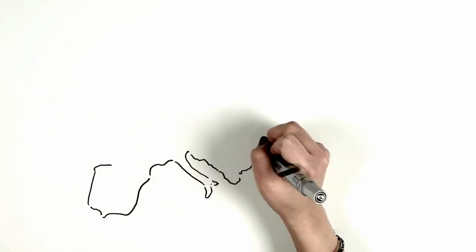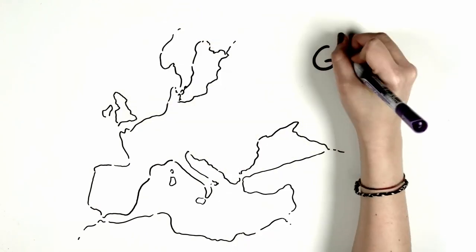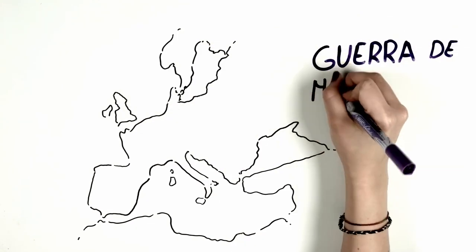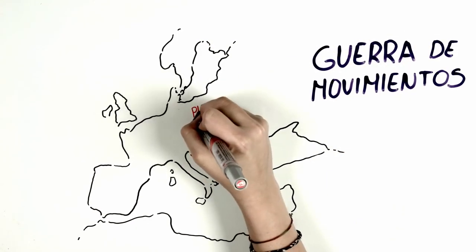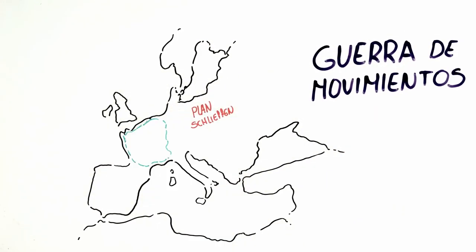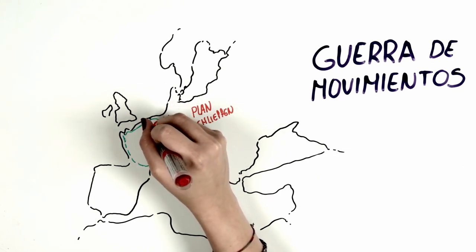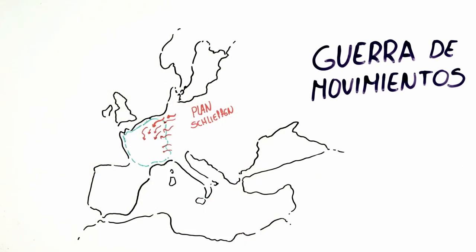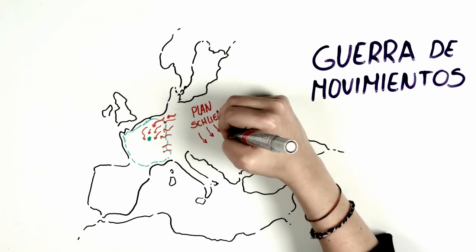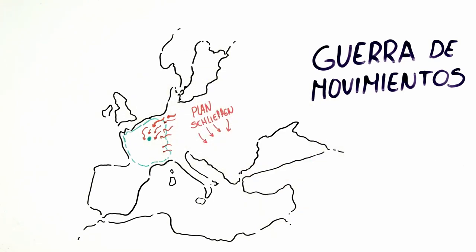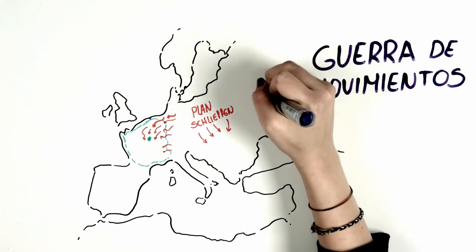With all these novelties, the war of rapid and sudden movements began. The Germans developed the Schlieffen Plan to invade France from Belgium — part of the German troops would go to the right to distract, while the bulk would press down the left to get to Paris. However, the plan did not go as expected, and part of the German troops came to stop the Russian advance.